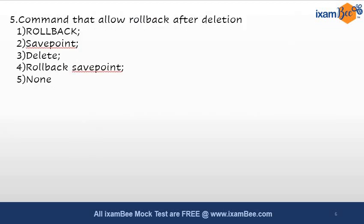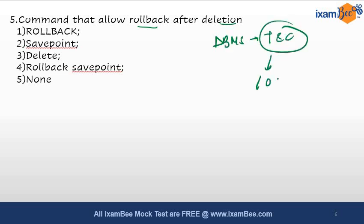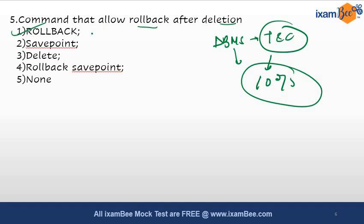Now for the fifth and final question in this video: commands that allow rollback after deletion. This is a DBMS question related to transactions and concurrency, which accounts for 10% in phase one. The answer is the rollback command. The rollback command allows you to roll back to the previously saved state, so even if you have made a deletion, you can rollback that change. These were the five memory-based questions from the SEBI 2020 pattern.